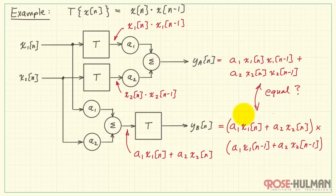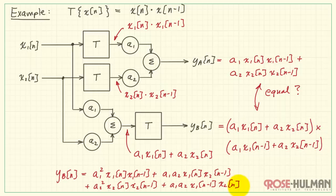Then we ask the question, are these two equal to each other? Well, let's go ahead and evaluate this product. We see that a1 squared, a2 squared, and some cross terms are showing up. We see that yA is not equal to yB. Therefore, we have to conclude that the system T is not linear.